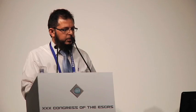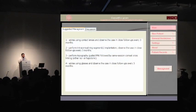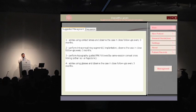The refractive error is minus 3 sphere, minus 4 cylinder. The K-max is 58 diopters. The thinnest location is 459 microns, and the topographic astigmatism is consistent with the manifest cylinder. If we click on management, the program will suggest some options arranged from the most favorable to the least favorable.